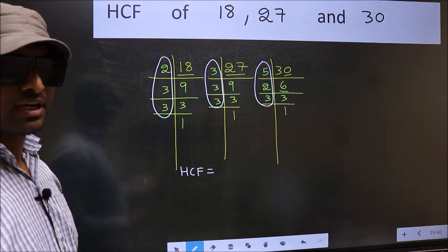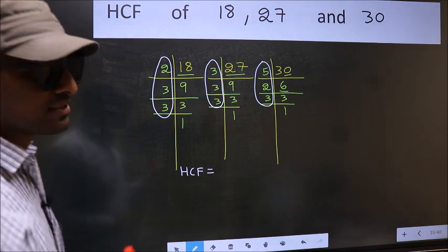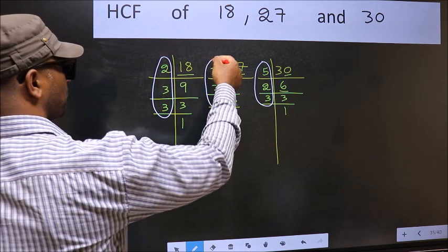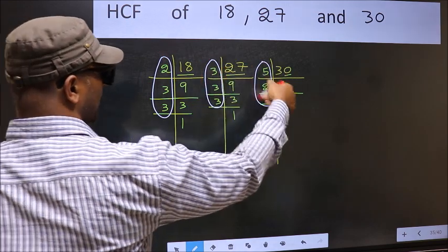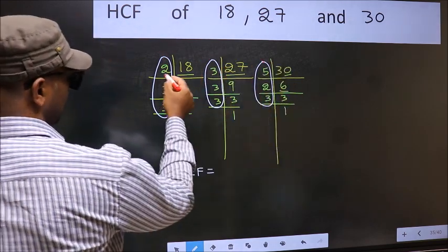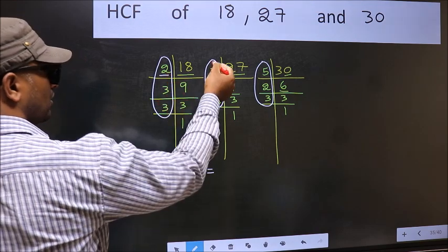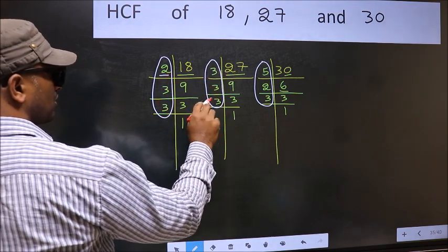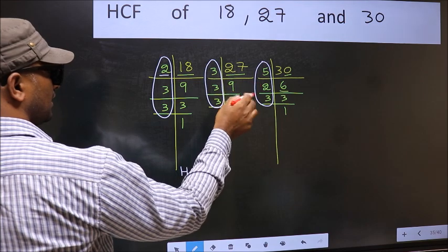So now let us find the numbers which should be present here and here and also here. Starting with the number 2. Do we have 2 here? No. So no need for us to check in the other place.